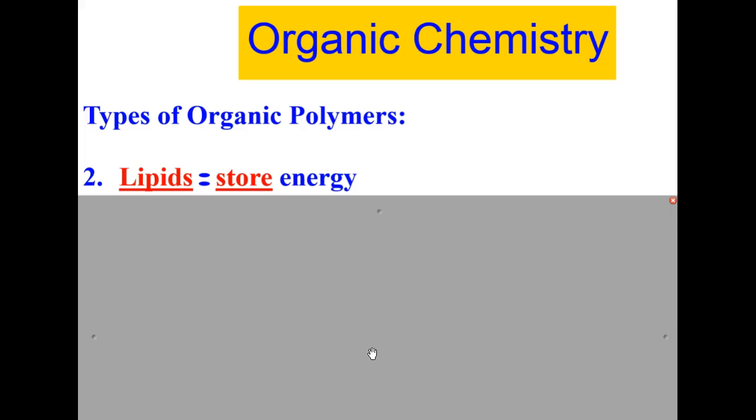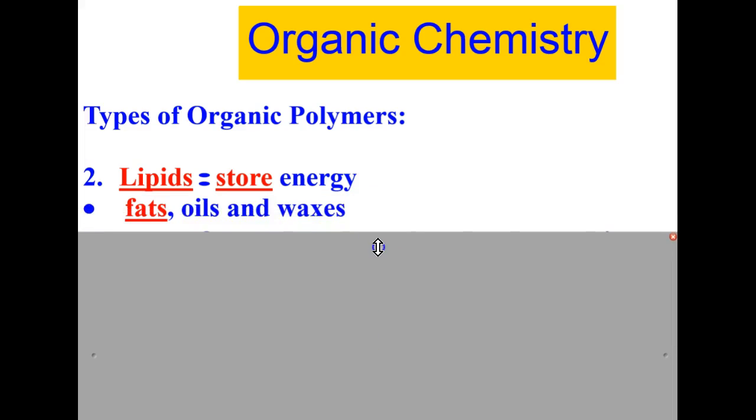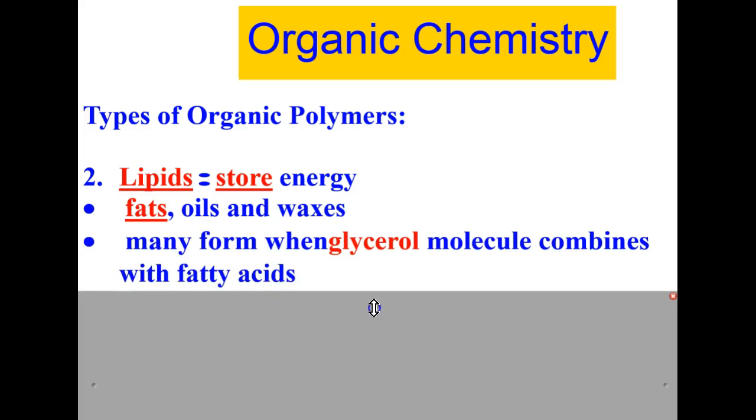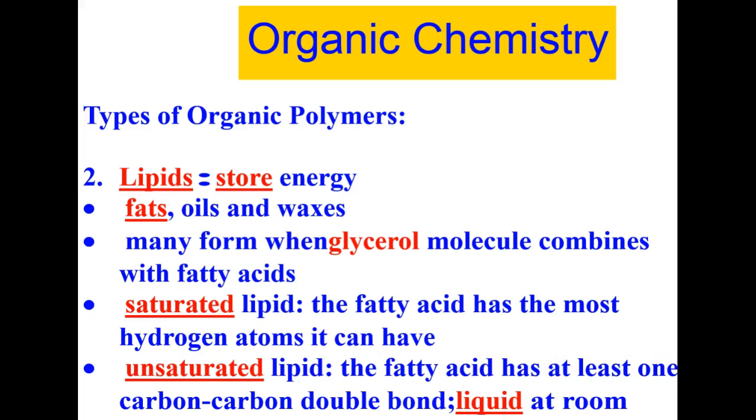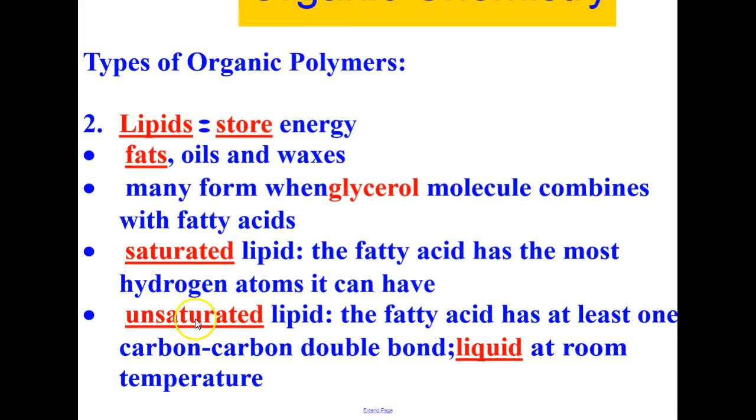Another type of organic polymer are lipids. The function of lipids in living things is to store energy. Examples of lipids include fats, oils, and waxes. Many lipids form when glycerol molecules combine with fatty acids. There are two types of lipids - saturated lipid, where the fatty acid has the most hydrogen atoms it can have, and unsaturated lipid, where the fatty acid has at least one carbon-to-carbon double bond, and these lipids are liquid at room temperature.